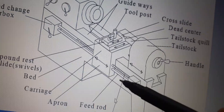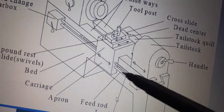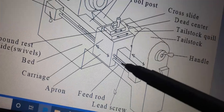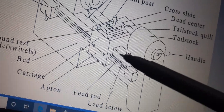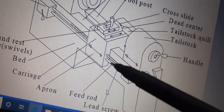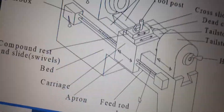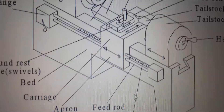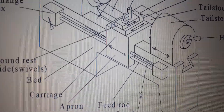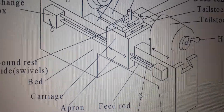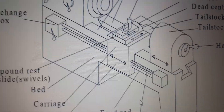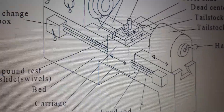The feed rod, which you can see below the carriage, is a long steel shaft with a keyway, supported at its ends. Below the feed rod there is a lead screw, which is a curved designed shaft. The feed rod provides longitudinal and cross feed to the job and transmits power from the headstock gears to the carriage apron mechanism with the help of gears.